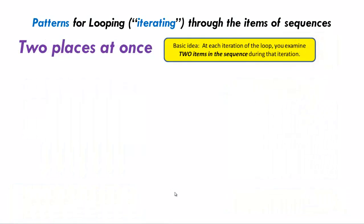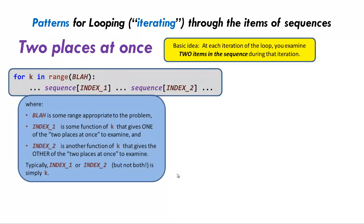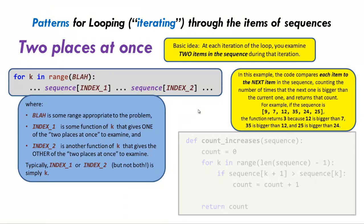Here's the next pattern — two places at once. In this pattern, at each iteration of the loop, you examine not one but two items in the sequence. Here's the Python code: we go through some or all of the sequence, and we're looking at sequence index one and sequence index two — two different indices — at the same time. Often, one of these two is k, and the other is something different.